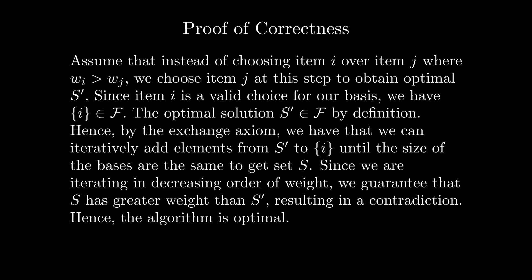This follows from a simple proof by contradiction. Assume that there is a basis with higher weight that can result from making a non-optimal local choice. This means that instead of choosing item i over item j where wi is greater than wj, we choose item j at this step and continue onwards. Since item i is a valid element that we can add to our basis, there must be an independent set i in f. The optimal solution s' with item j is also an independent set by definition, hence, applying the exchange axiom, we have that we can iteratively add elements from s' to i until the size of the bases are the same.